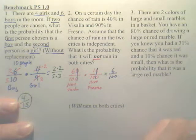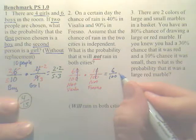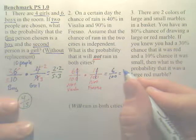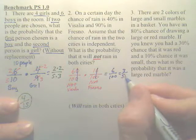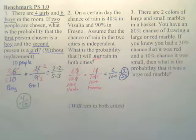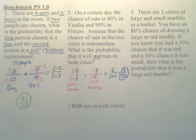So I have a six percent chance, which I could reduce to actually three fifties. But I have a six percent chance, because six out of a hundred, of it not raining in both cities.